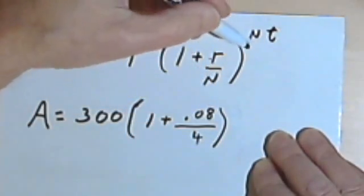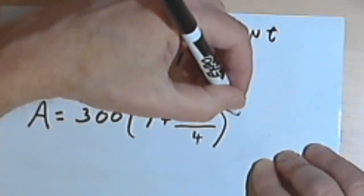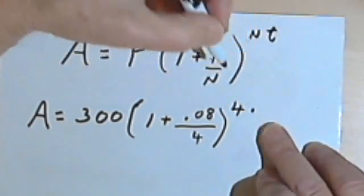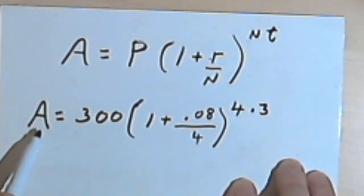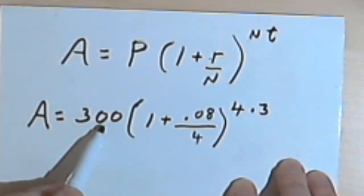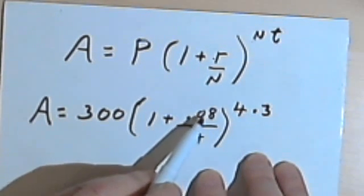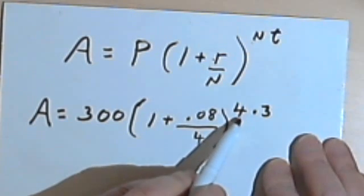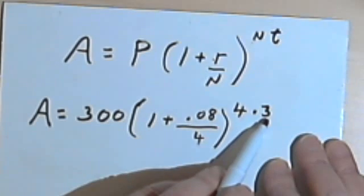But they're also going to do their compounding more often than once a year, so we're going to multiply the number of compounding periods times the number of years, and let's say it's 3 years. So now we've got this equation: A, the amount of money I'm getting back, equals 300, my principal, times 1 plus 0.08, 0.08 is my rate, divided by 4, the number of compounding periods. And that's raised to the number of compounding periods, 4, times the number of years.